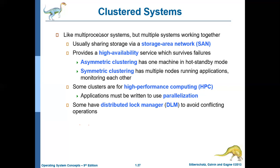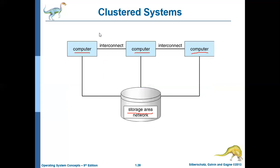One of the latest developments of clustered systems is storage area network, where multiple nodes share the same storage. These multiple nodes may be separated by several kilometers. The storage referred to here is physical secondary storage devices. The storage is shared among multiple devices separated over several kilometers.